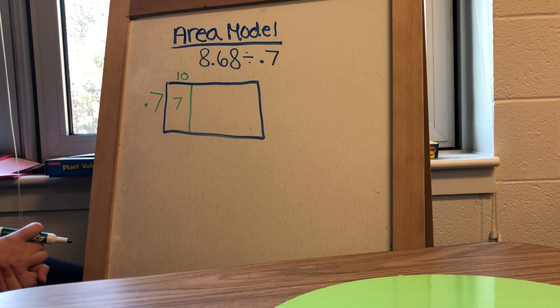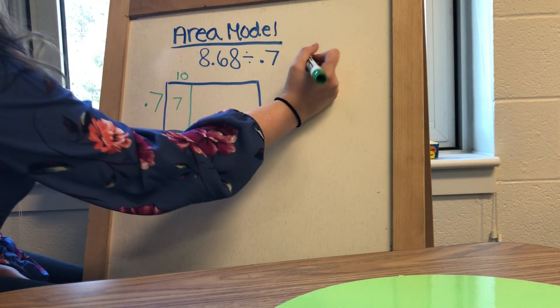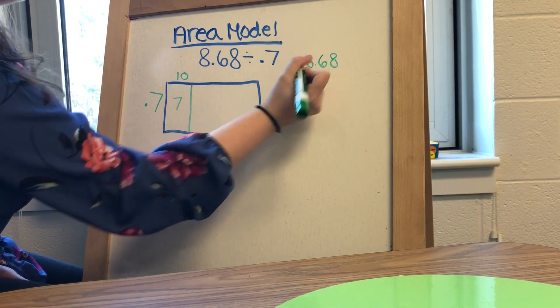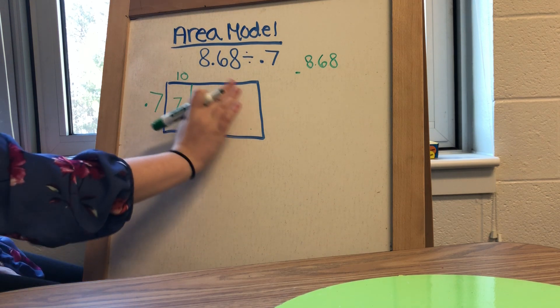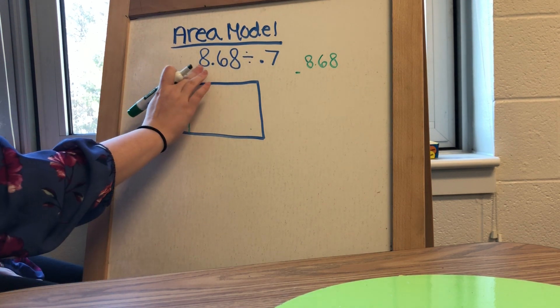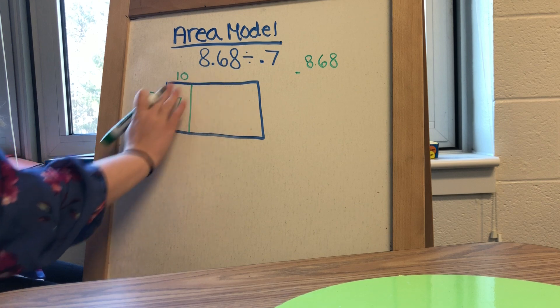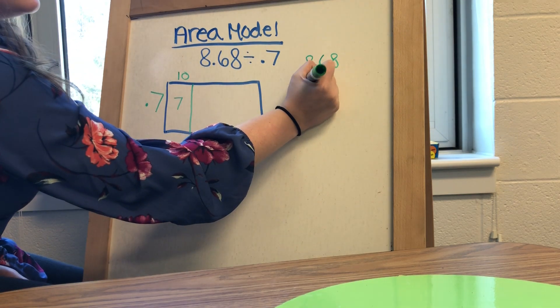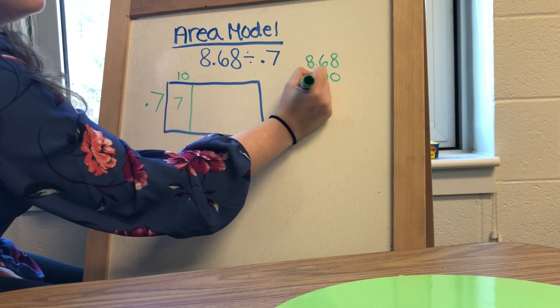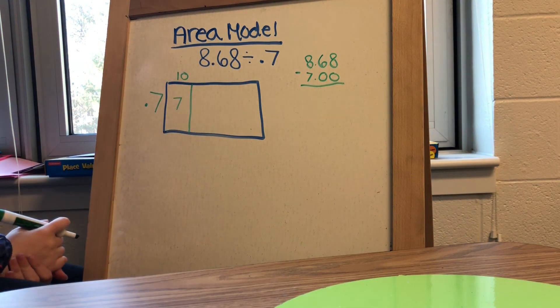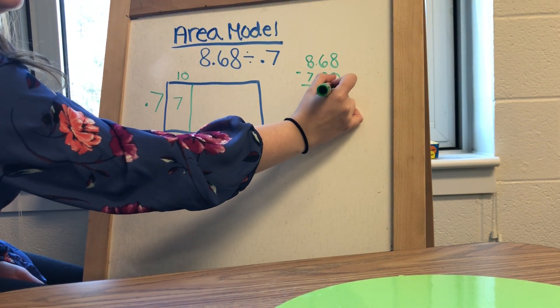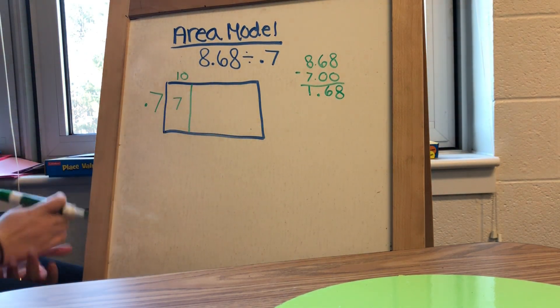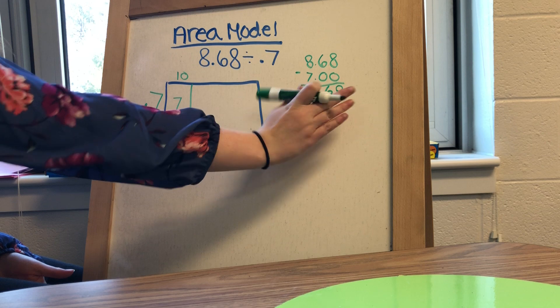Now the key to an area model with division is you're going to end up putting your dividend, so 8 and 68 hundredths on the side, and you're going to subtract out whatever you end up filling inside your box because remember you're trying to get this number to be inside the box. So because I did 7 tenths times 10 equals 7, I'm going to subtract 7 wholes from the start of my number. So I subtract, I get an 8, a 6, I drop down my decimal, and I get 1. So the rest of my box needs to equal 1 and 68 hundredths.